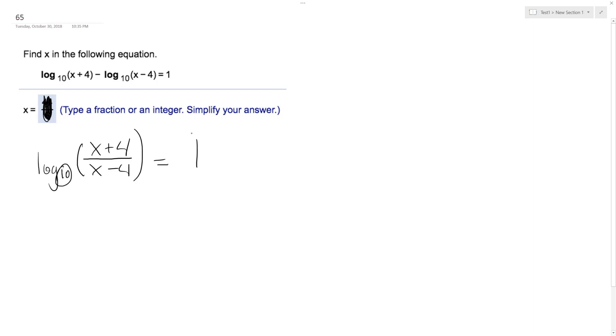So I can take this as my base, here's my exponent value. So 10 raised to the 1 is equal to x plus 4 over x minus 4. So I get, this is just 10, so I'm going to multiply 10 by x minus 4. So I get 10x minus 40.